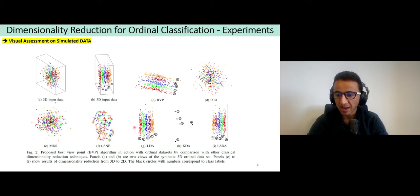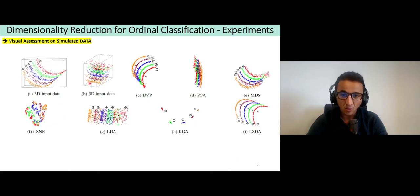For t-SNE, although we have some local clusters that are composed of instances that belong to the same class, still the intrinsic structure of ordinality is not preserved. If we look at this additional assessment on simulated data, this time twist roll data, we can see that BVP succeeds also at obtaining the best view of ordinality that corresponds somehow to the view obtained by a rotation of this 3D structure.